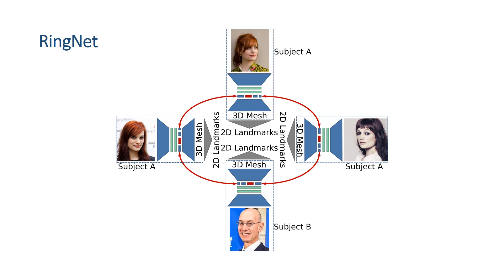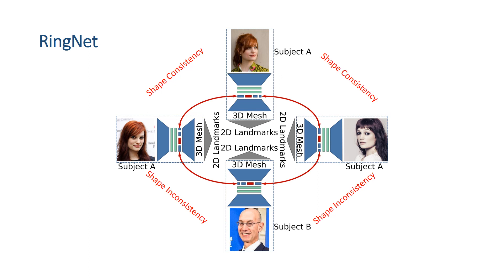We formulate this observation as a 3D shape consistency loss in an end-to-end training framework, where we use multiple images of the same person under varying conditions and constrain their shape to be the same. We also exploit the fact that different people have different 3D shapes. Consequently, the RingNet loss simultaneously enforces that images of the same person should have the same shape, while that shape should be different for an image of a different person.